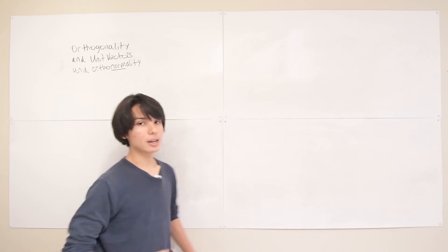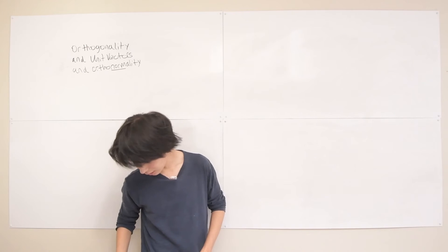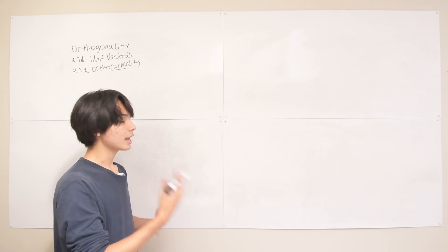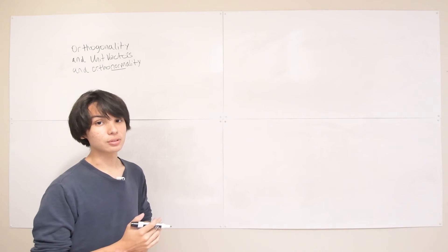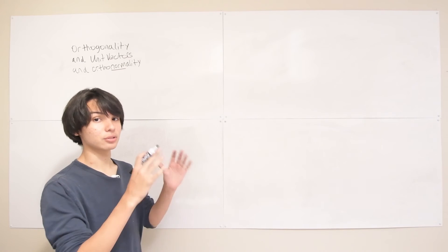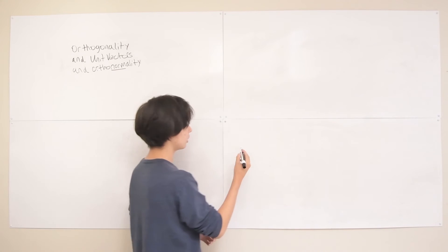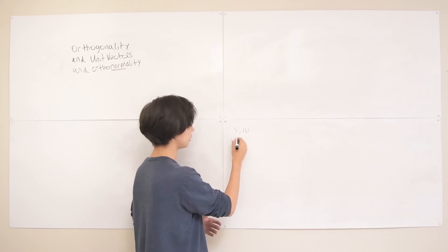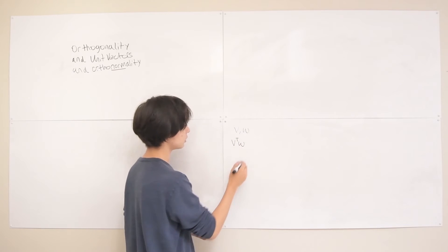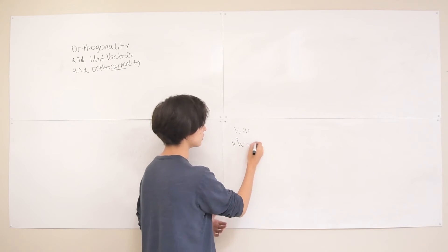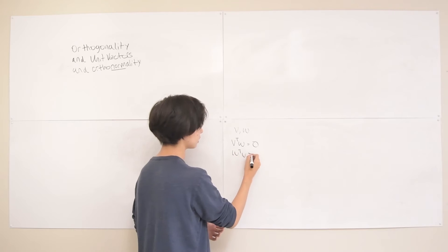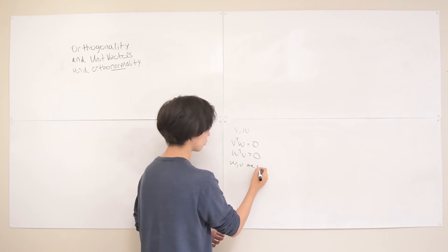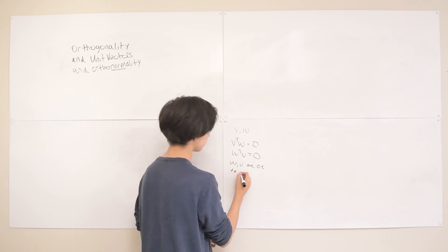How can we mathematically tell if two vectors are orthogonal when we just have their components listed? If we have v and w, they are orthogonal simply if v transpose w — the dot product between them — equals 0. And the reverse, w transpose v, is the same thing.